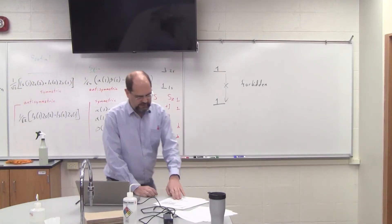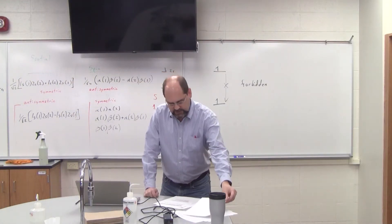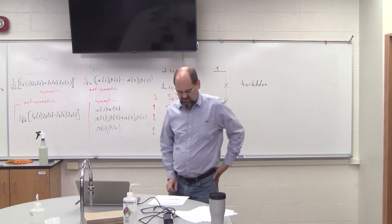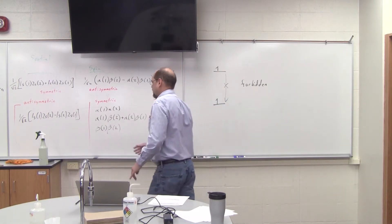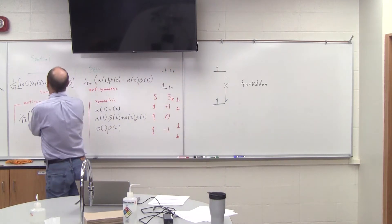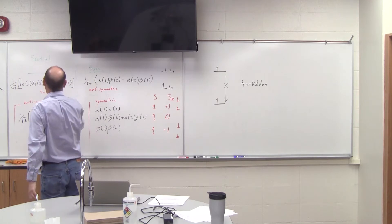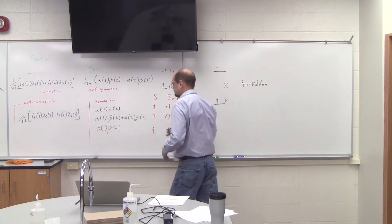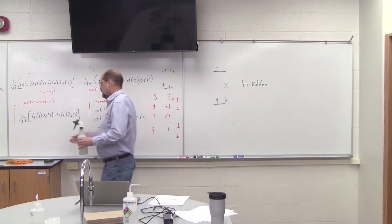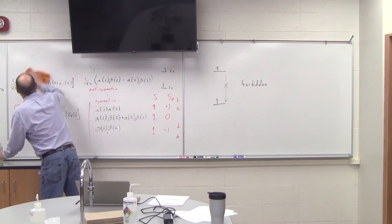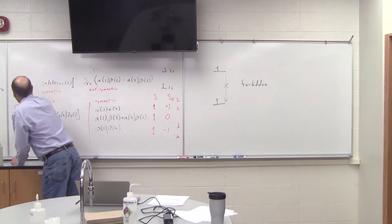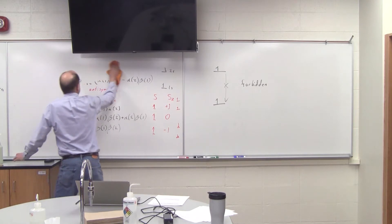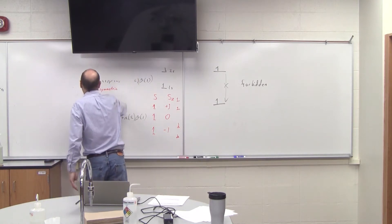So that's my singlet state, triplet state. The last piece I'm going to cover today is what happens — you can probably see this is kind of complicated, isn't it? The wave function — there's an easy way to write the wave function. It's called a Slater determinant.